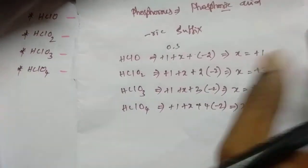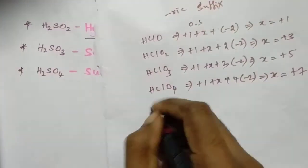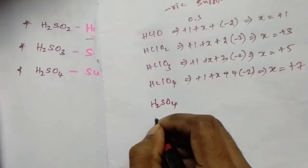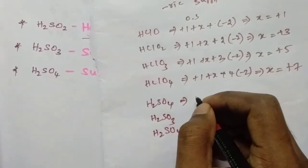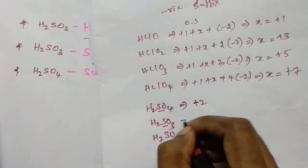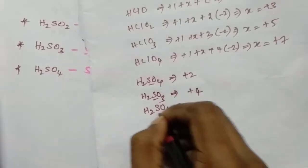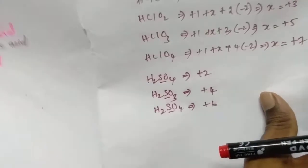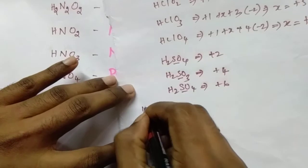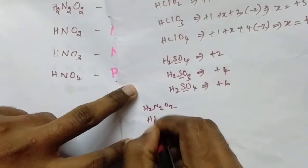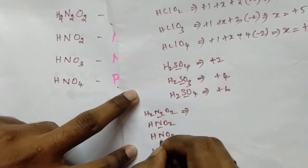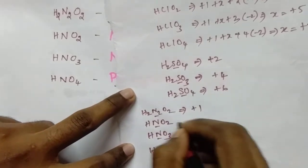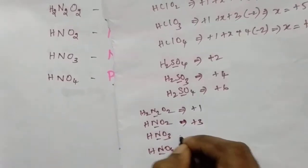What about other oxy acids? Pause the video and calculate the oxidation state for the other acids. For sulfur oxy acids: sulfur is +2, then +4, then +6. For nitrogen oxy acids: nitrogen is +1, +3, +3, +5, and in the next acid +7. Calculate the oxidation states for nitrogen: HNO2, HNO3, and so on.